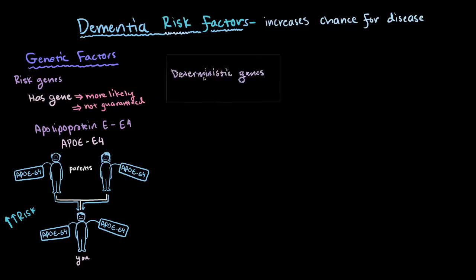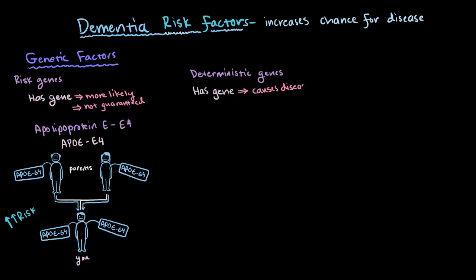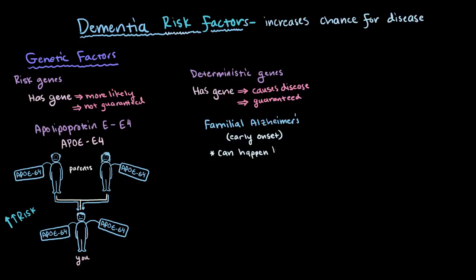It's been suggested that this gene is a factor in about 20-25% of all Alzheimer's cases — so that's the major risk gene. Deterministic genes, on the other hand, directly cause a particular disease. In other words, it determines that the disease will be present and essentially guarantees that anyone who inherits it will develop the disorder. As applied to Alzheimer's disease, this is called familial Alzheimer's, or sometimes early-onset Alzheimer's, as it can often happen before age 65.